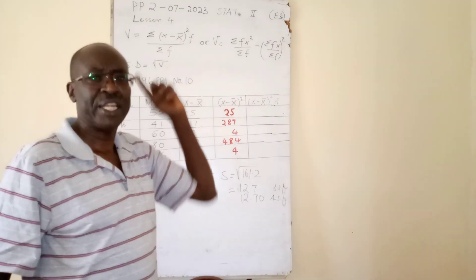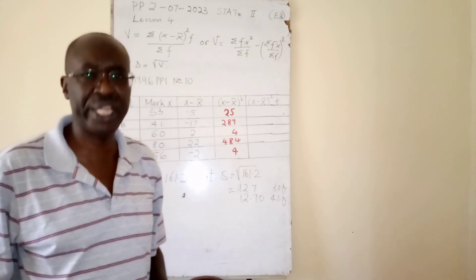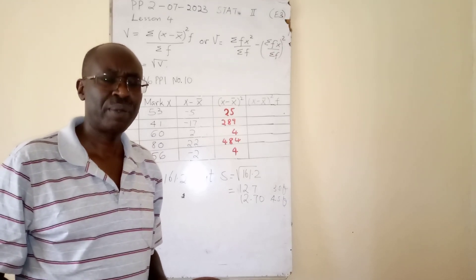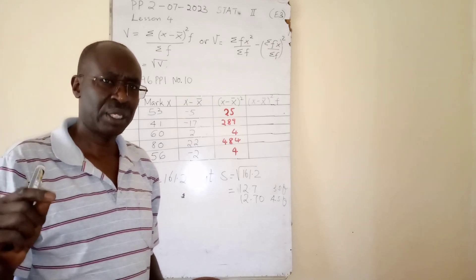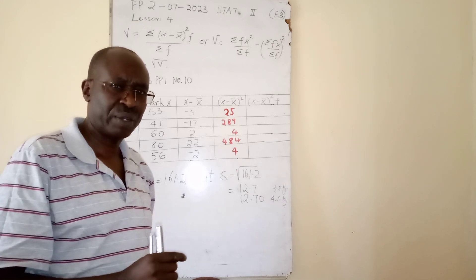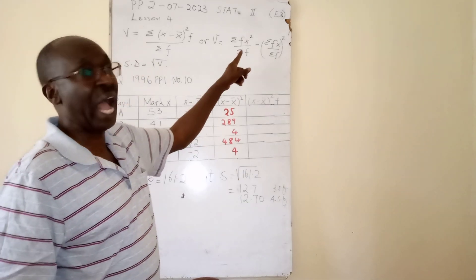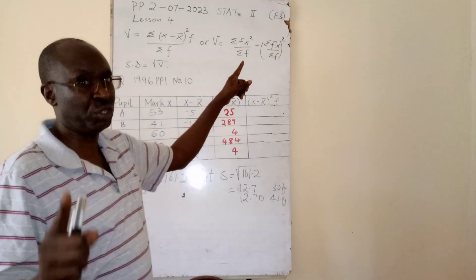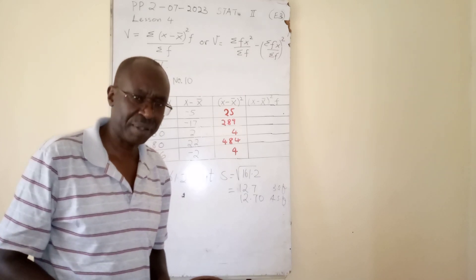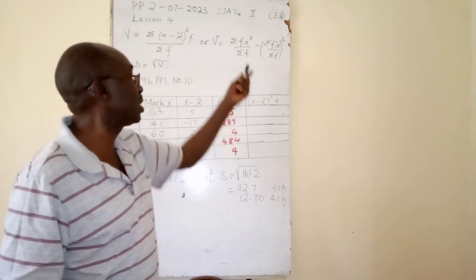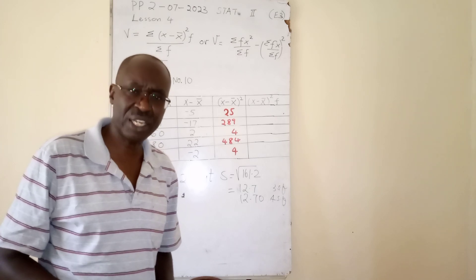This second formula here is very important whenever you are asked mean from assumed mean. With the x's, with the data given, will give you deviation. Once you create a deviation, it will go in place of x and you will still get a good answer. In place of x in this second formula, you can use d for deviation.